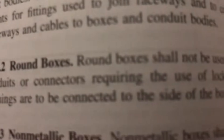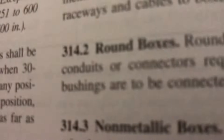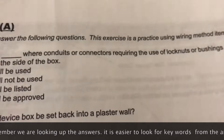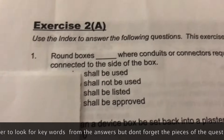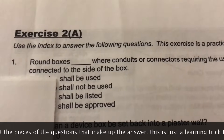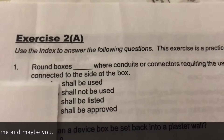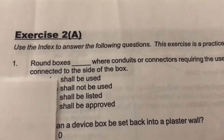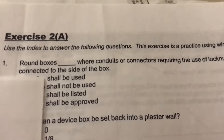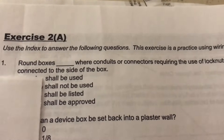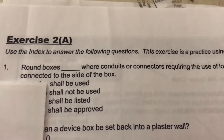We found it — 'Round boxes shall not be used where conduits or connectors requiring the use of lock nuts or bushings are to be connected to the side of the box.' So the answer is 'shall not be used.' Going back to our answer choices, that matches exactly. It's pretty easy — look up 'boxes' in the index, find Article 314, scan the article, find 'round boxes,' then match your keywords like 'shall not be used.' That's your first lesson in looking up code book answers.